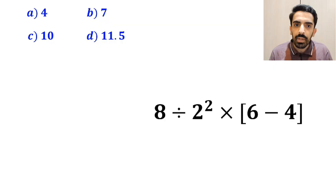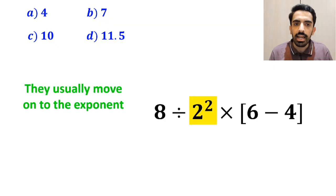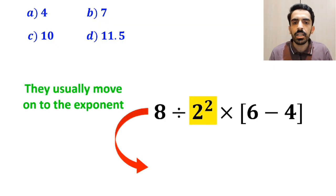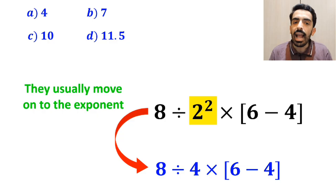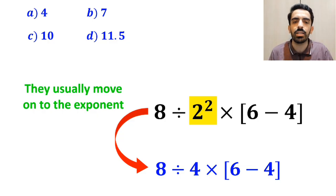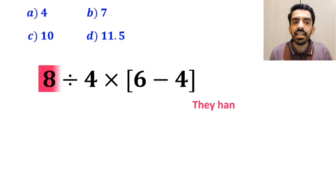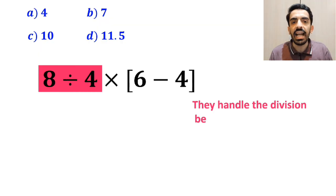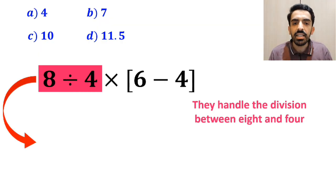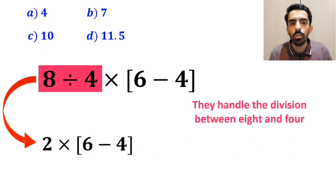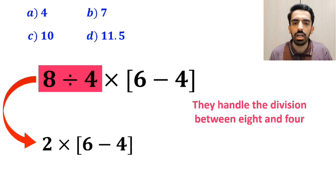In the next step, they usually move on to the exponent, and rewrite this expression in the simplified form: 8 divided by 4 multiplied by (6 minus 4) inside the brackets. Then they handle the division between 8 and 4, and replace this expression with 2 multiplied by (6 minus 4) inside the brackets.